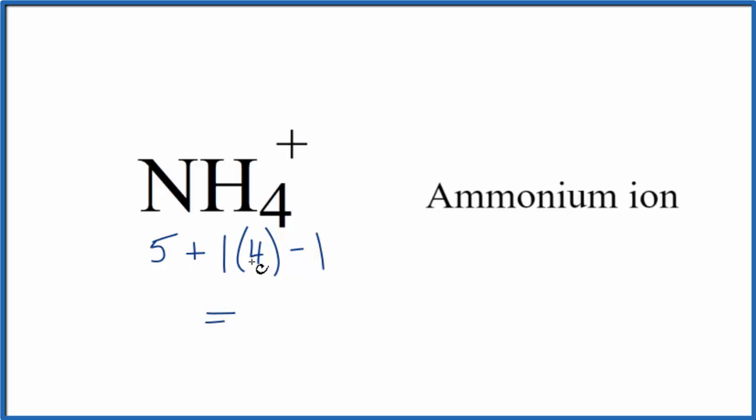That gives us a total of 5 plus 4 is 9, minus 1, 8 valence electrons for the NH4 plus Lewis structure.